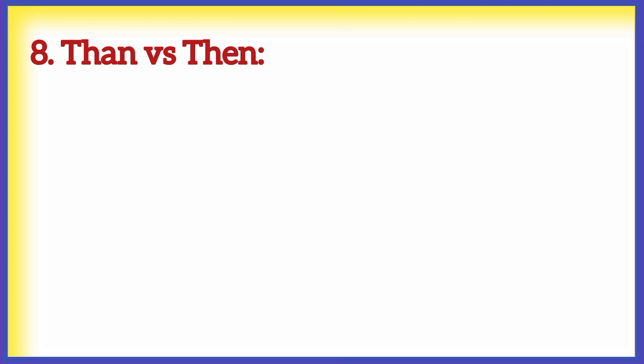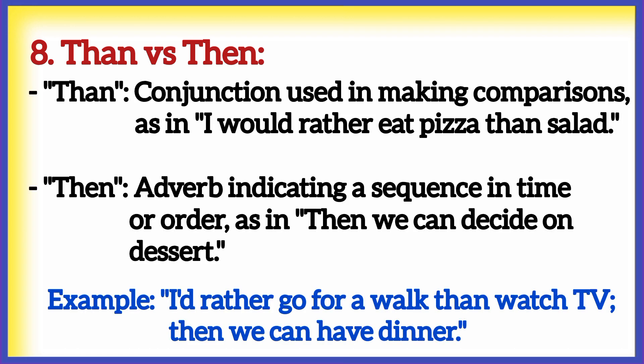Number eight: than versus then. 'Than' is a conjunction used in making comparisons, as in 'I would rather eat pizza than salad,' while 'then' is an adverb indicating a sequence in time or order, as in 'then we can decide on dessert.' Example: 'I'd rather go for a walk than watch TV, then we can have dinner.'